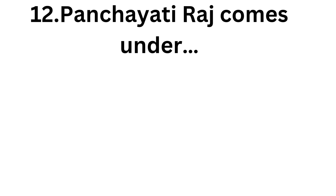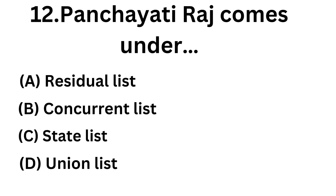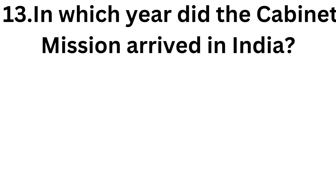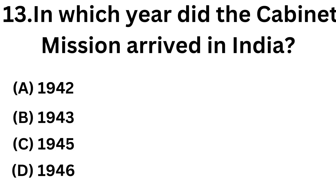Now the twelfth question: Panchayati Raj comes under which list? Options are: residual list, concurrent list, state list, union list. The answer is the state list. The thirteenth question: in which year did the Cripps Mission arrive in India? Options are 1942, 1943, 1945, 1946.